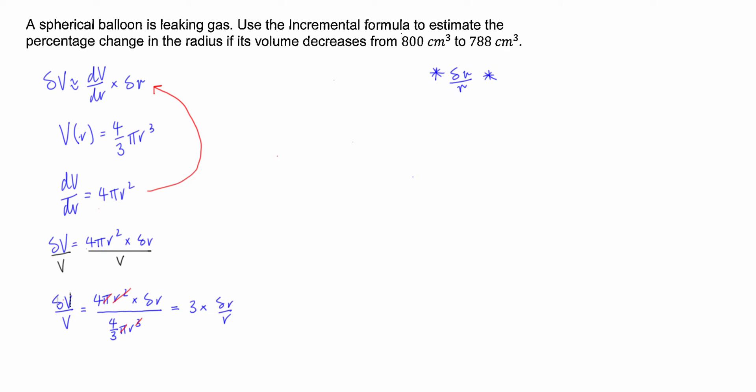So we know that the change in volume is negative 12 centimeters cubed. So delta v is equal to negative 12. We know that the original volume is equal to 800. So we can insert this into our equation now as well. So I'm going to just go well therefore negative 12 over 800 is equal to three times delta r over r.